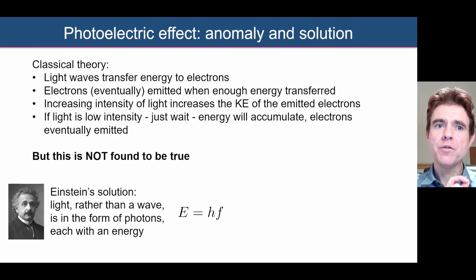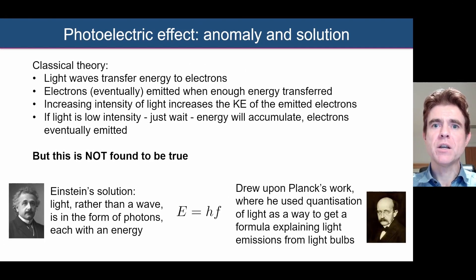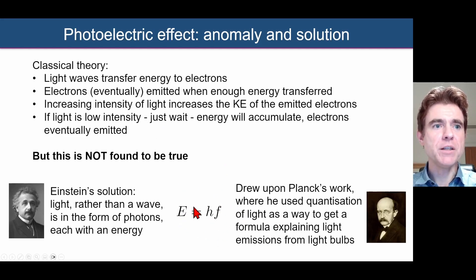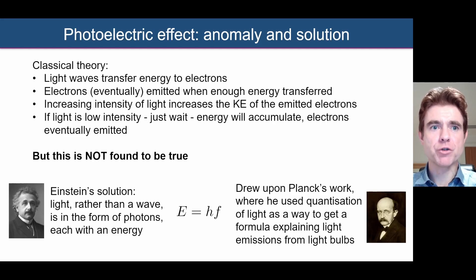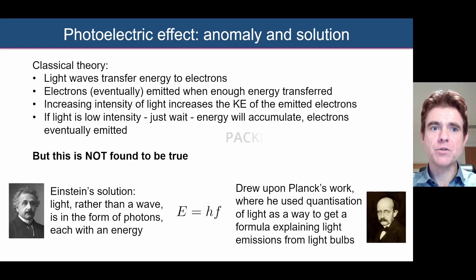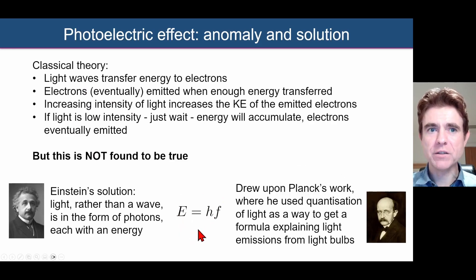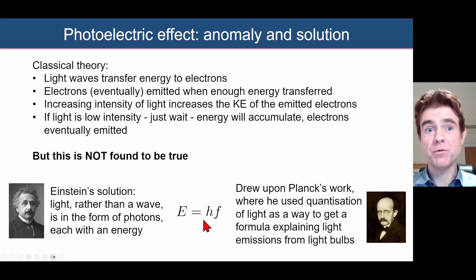What Albert Einstein did was pick up an equation which Max Planck had put forward some time earlier, when investigating electromagnetic radiation from black bodies and light bulbs. Planck had put this mathematical formula in place, and Einstein picked it up and showed that it perfectly explains the photoelectric effect — namely, that light can be regarded as packets or quanta of energy called photons.